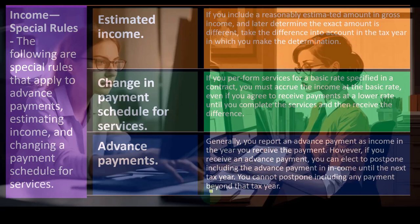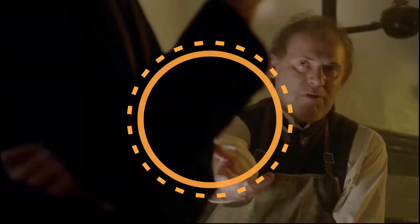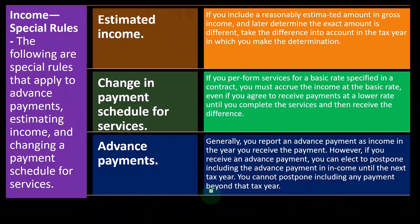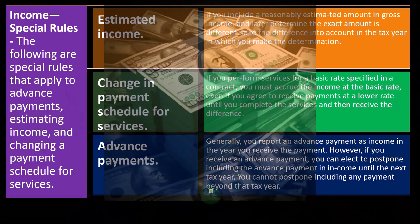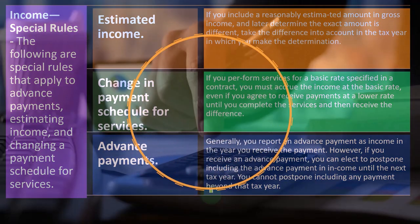Changing the payment schedule — advanced payments. Generally, you report an advanced payment as income in the year you receive the payment. Now notice on an accrual method, usually what happens in an accounting system is you get paid at the same point in time, or you do the work first.